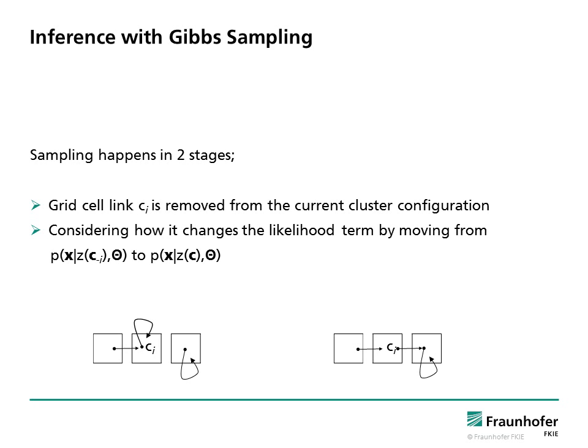Sampling in Markov chain happens in two stages. First, we remove the grid cell link from the current configuration and consider how it changed the likelihood term. Removing ci either leaves the cluster structure unchanged or splits the cluster into two clusters. The sampler explores the space of possible segmentations with these movements.